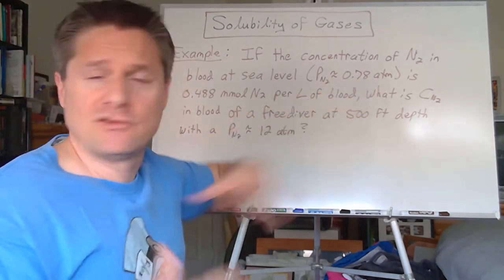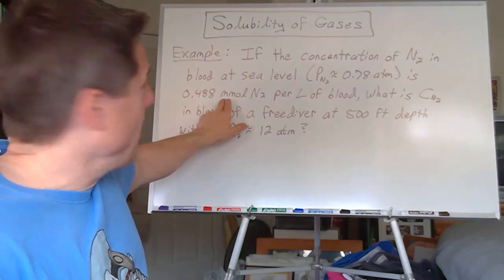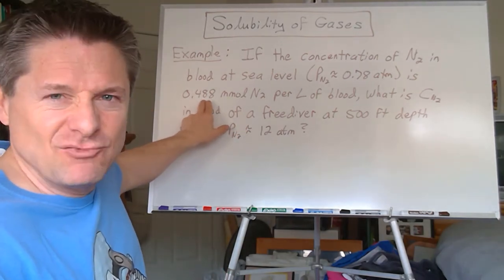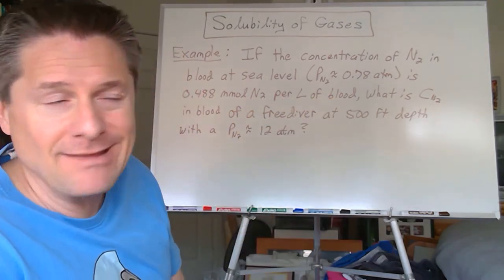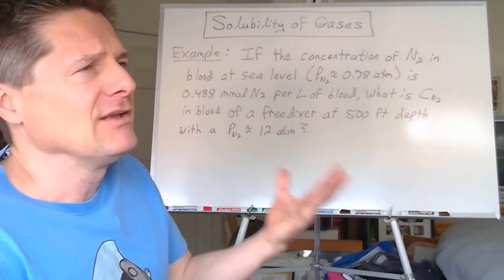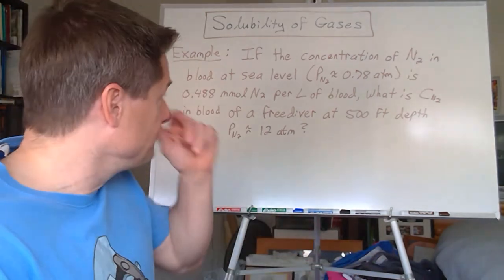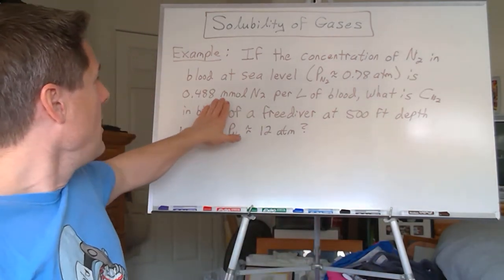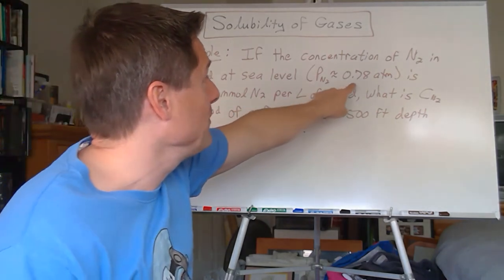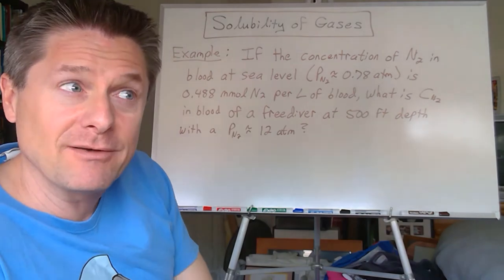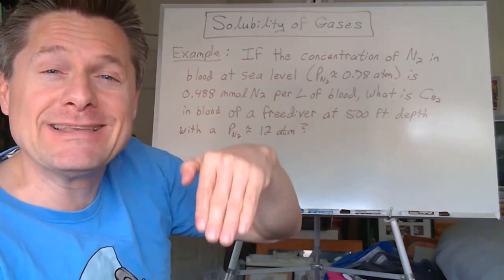And the concentration at that pressure would be about, I looked around, about 0.488 millimoles of nitrogen for every liter of blood, right? And you'll see this, other things, is so many milliliters of nitrogen per liter of blood or molarity or whatever units. It doesn't really matter. Well, if the concentration of nitrogen in your blood is 0.488 millimoles of nitrogen per liter of blood at a pressure of 0.78 atm at sea level, what would the concentration of nitrogen in your blood be if you went down?